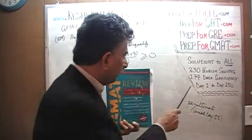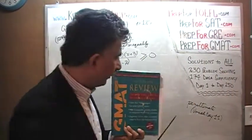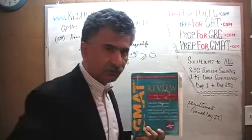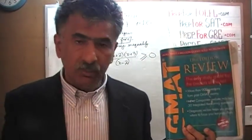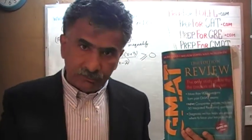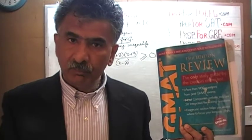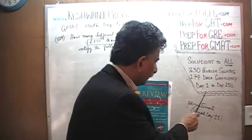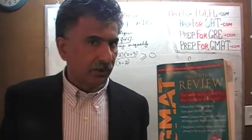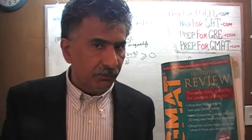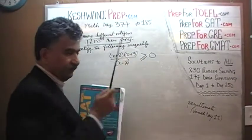The book contains 230 problem solving questions and 174 data sufficiency questions. We have already solved every single math problem from this book. If you are interested in watching the original solutions to the problems, you will find the original solutions from day number 1 through 250. Right now we are in the process of redoing the problems and we are on page number 185.